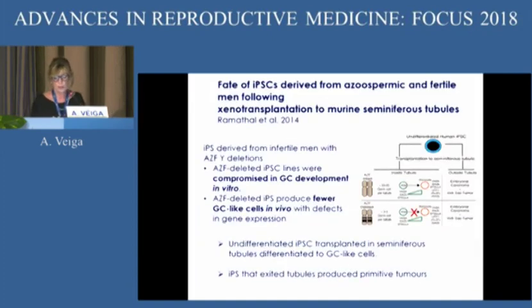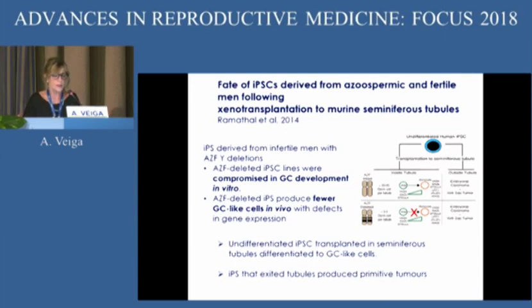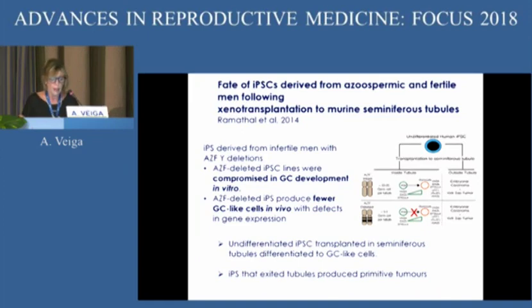There are published papers on this. In one case, IPS cells were obtained from azoospermic and infertile men and transplanted into murine seminiferous tubules. They showed that the development of these cells was compromised in the case of infertile men, constituting a fantastic model for infertility in genetically azoospermic men.